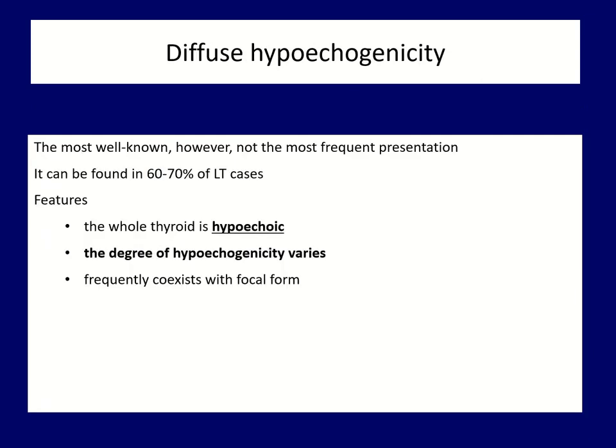Let's look at these in a little more detail. Diffuse hypogenicity is the most well-known form of lymphocytic thyroiditis, surely among radiologists. However, this is not the most frequent presentation. The degree of hypogenicity varies and this is in relation to the severity of the thyroiditis.